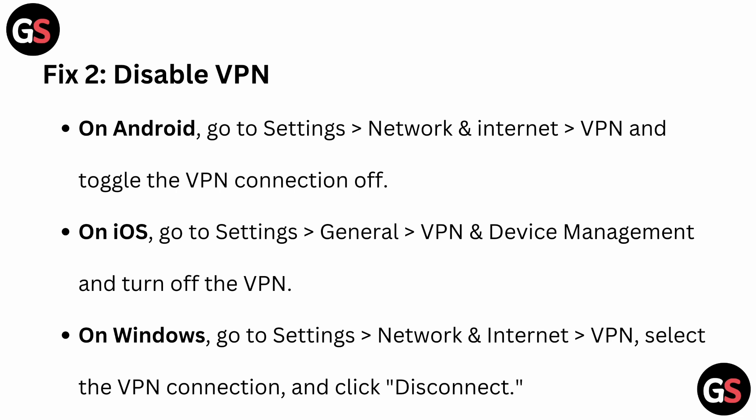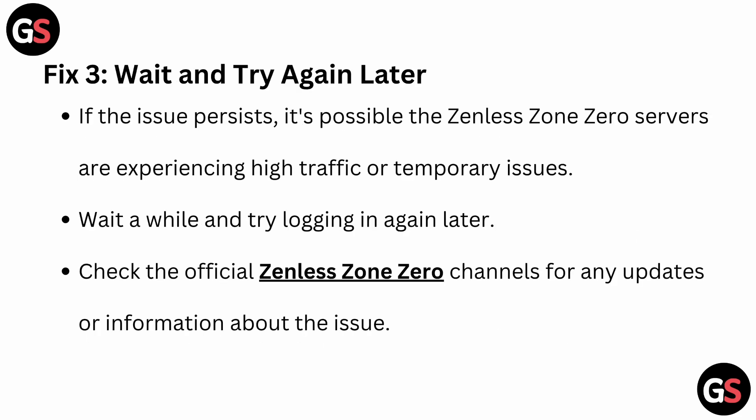On Windows, go to Settings, then Network & Internet, then VPN. Select the VPN connection and click Disconnect. Fix 3: Wait and try again later.